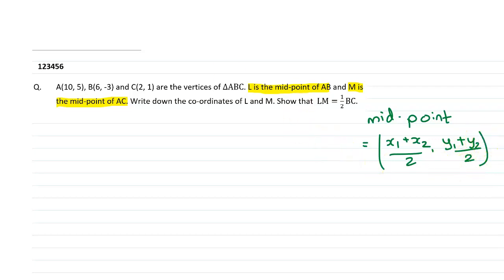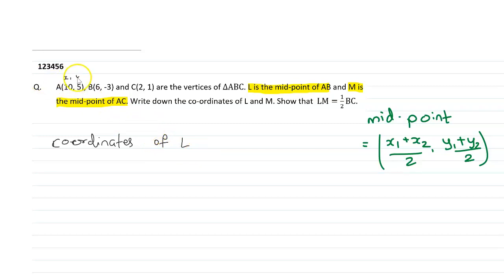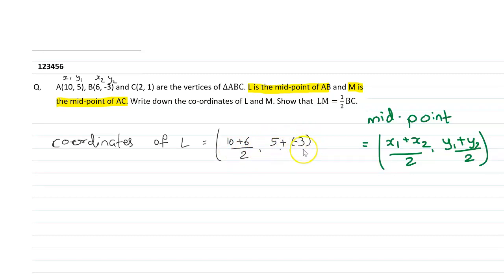Using this formula, we can find the coordinates of point L, which is the midpoint of AB. For L, X1,Y1 will be A and X2,Y2 will be B. So coordinates of L are (10 plus 6)/2 comma (5 plus negative 3)/2. That gives 16/2 = 8, and (5 minus 3)/2 = 1. So the coordinates of point L are (8, 1).